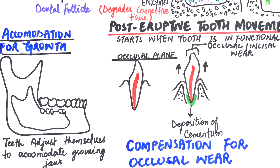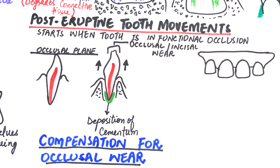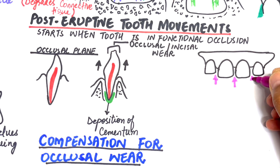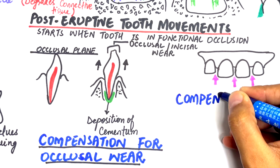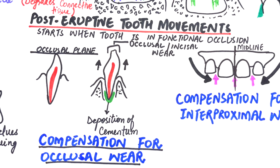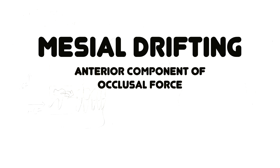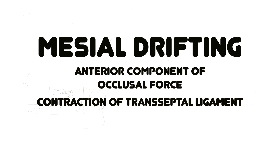During chewing movements, teeth rub against each other on the sides of the contact points, resulting in interproximal wear. The tiny spaces left behind through this interproximal wear are filled by the mesial or forward movement of the teeth towards the midline, thus re-establishing interproximal contact. The term for this mesial or forward movement of the teeth is called mesial drifting. The forces that cause this mesial drift are multifactorial and include an anterior component of occlusal force, contraction of the transseptal ligament between teeth, and soft tissue pressure.